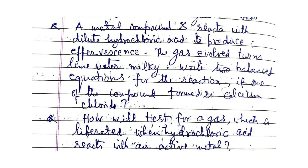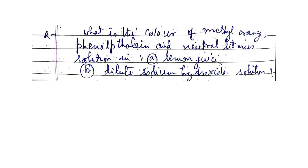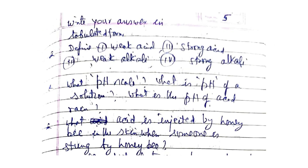A metal compound reacts with dilute hydrochloric acid to produce effervescence; the gas evolved turns lime water milky. Write the balanced equation for the reaction if one of the compounds formed is calcium chloride. How will you test for the gas liberated when hydrochloric acid reacts with an active metal? What is the color of methyl orange, methylene blue, and neutral litmus solution in lemon juice and dilute sodium hydroxide? Write your answer in tabular form.